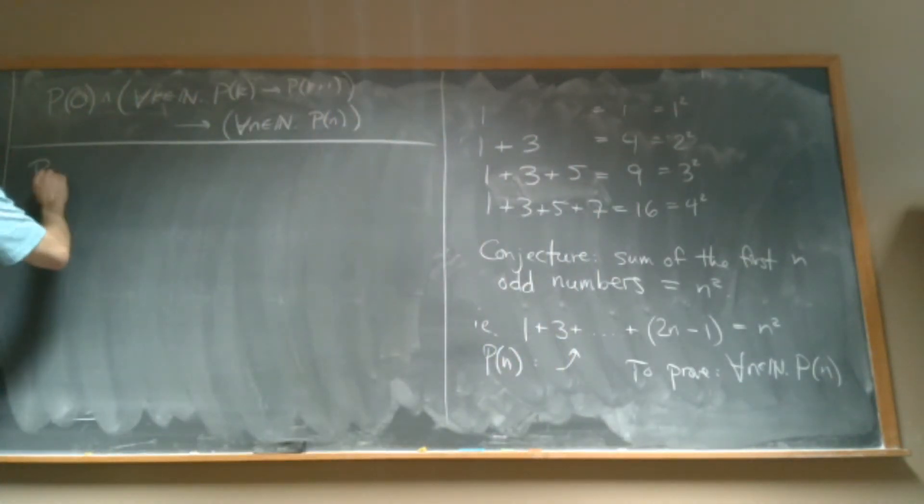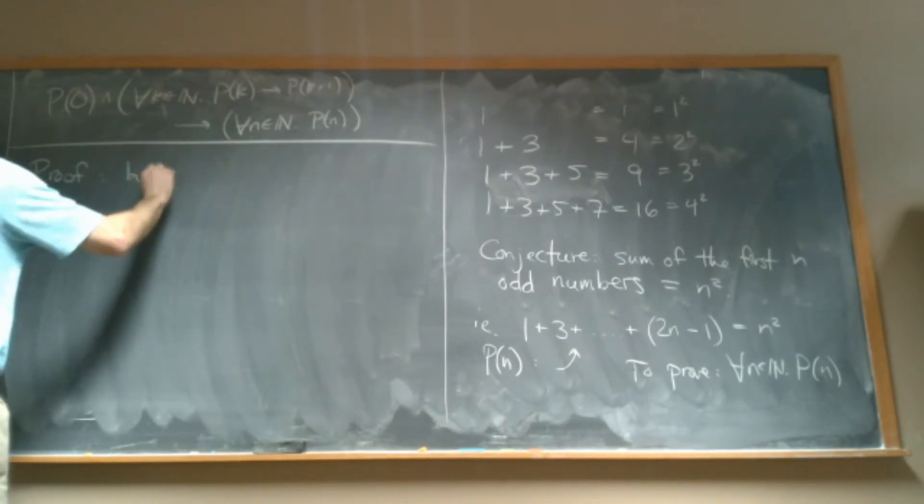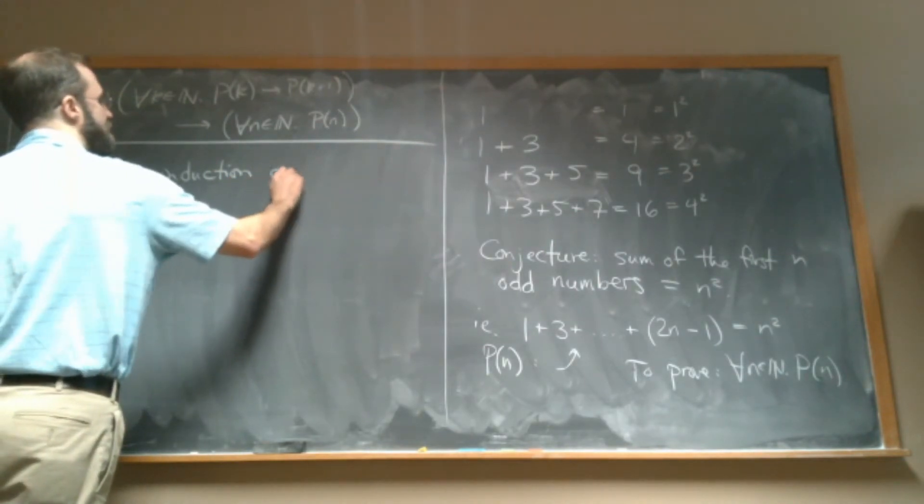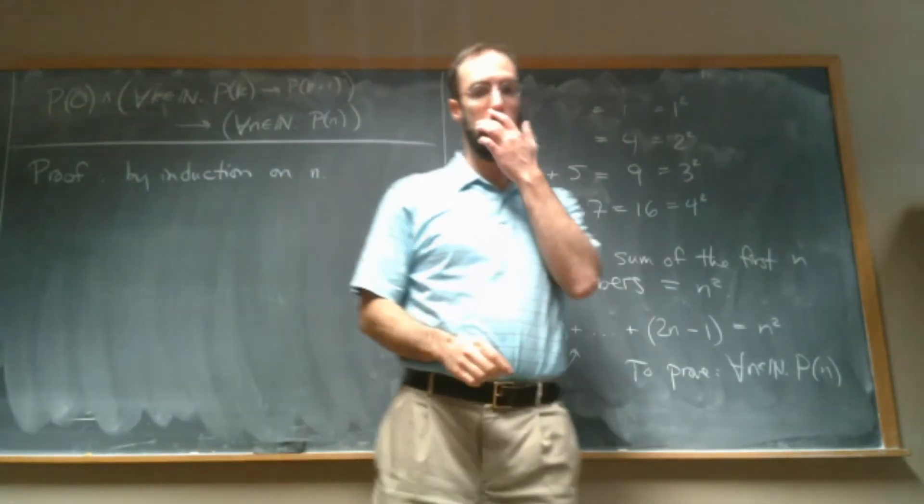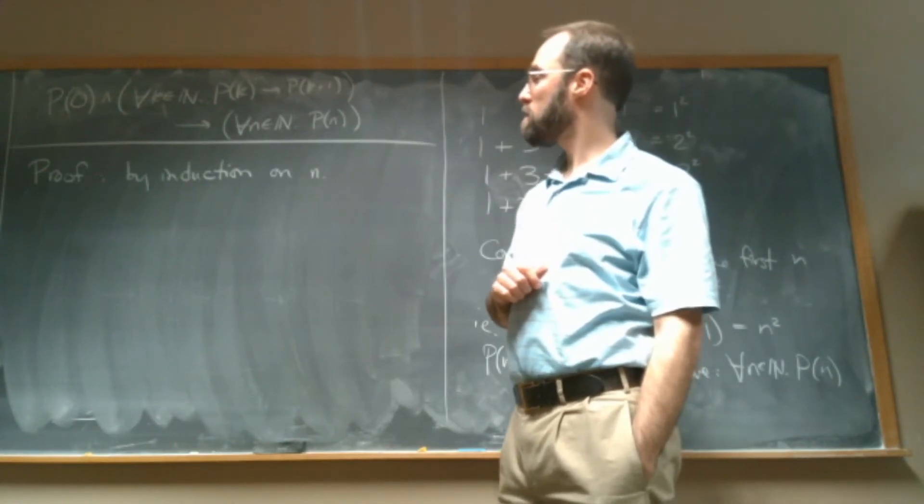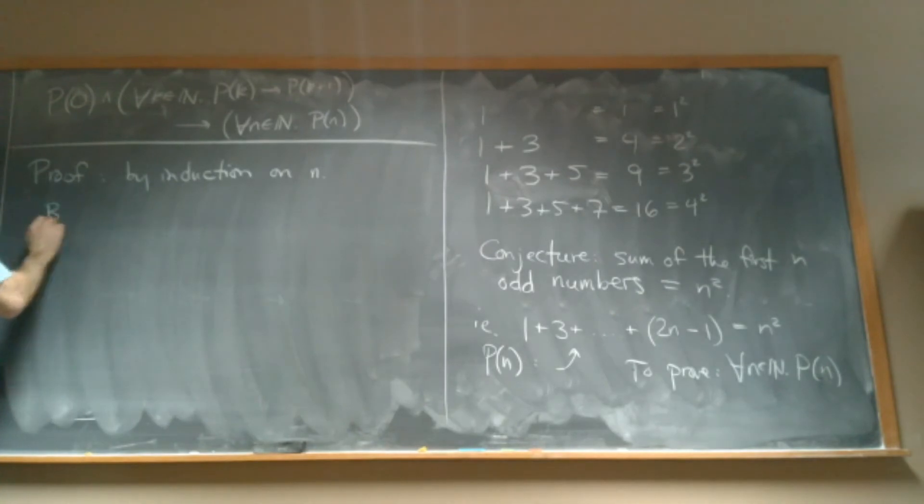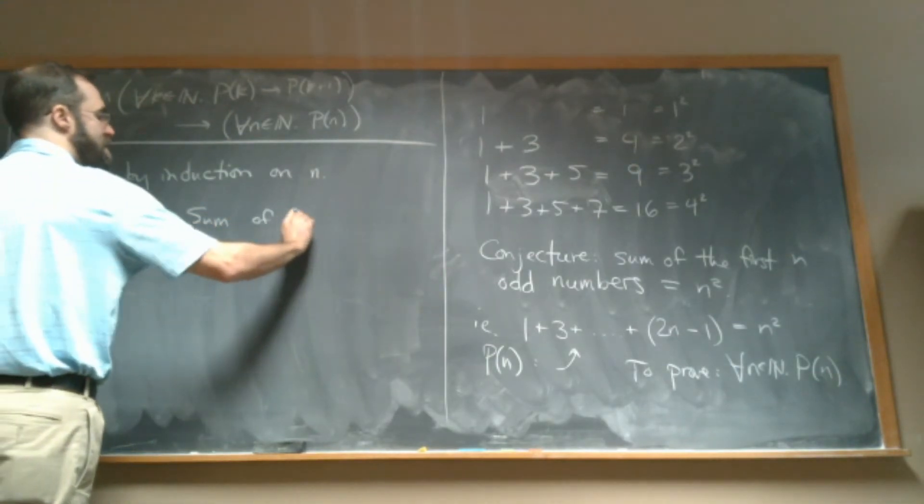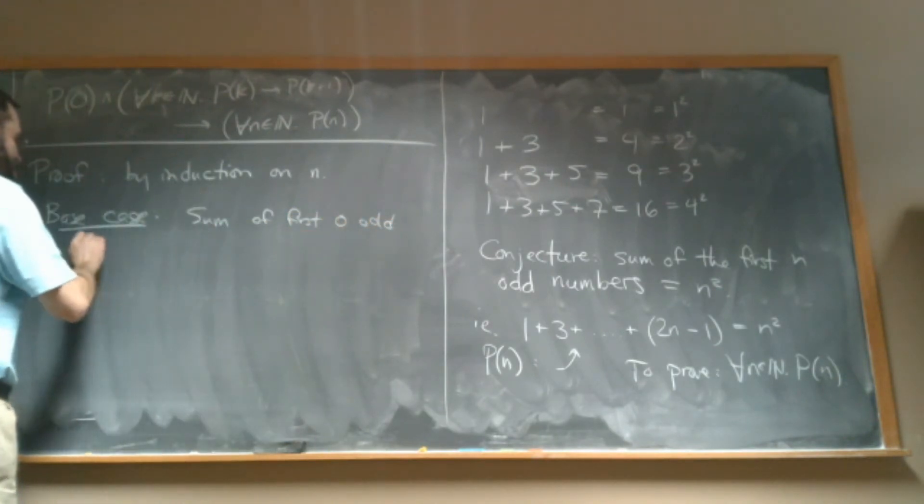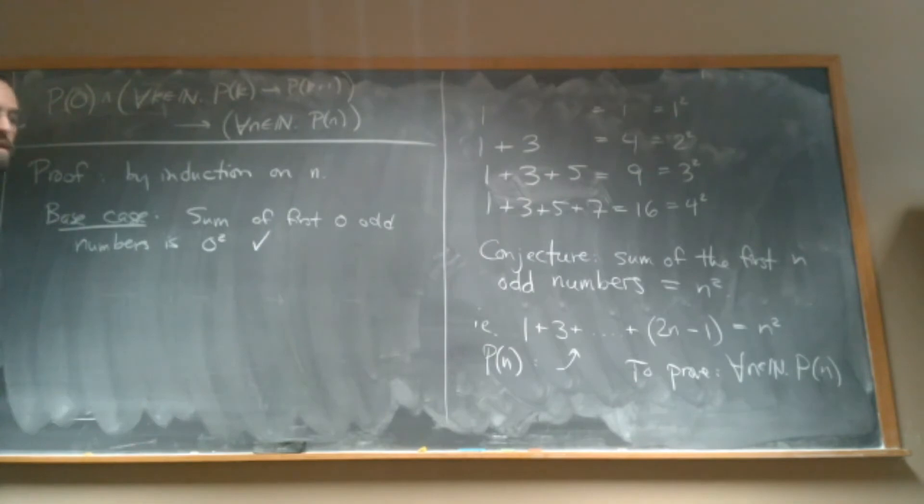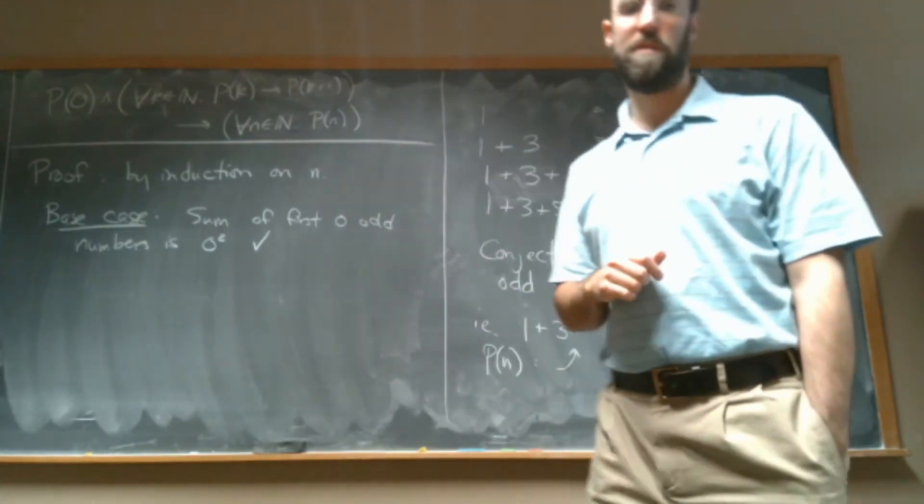So let's do it. So, proof by induction on n to remind ourselves what variable it is that we're proving it's true for all n. So our base case, we have to prove P(0), which is the sum of the first zero odd numbers, is zero squared. All right. We'll just say check. We already argued why that's in fact true.